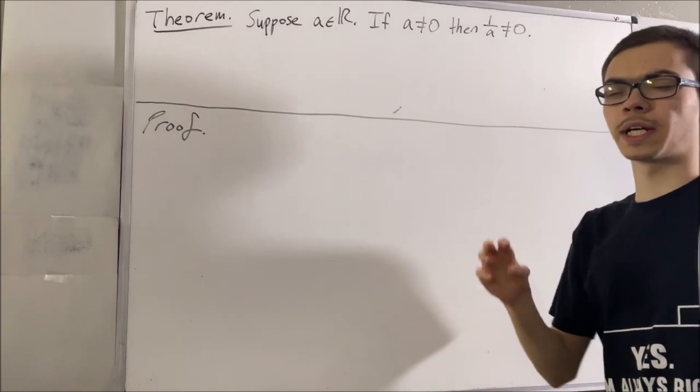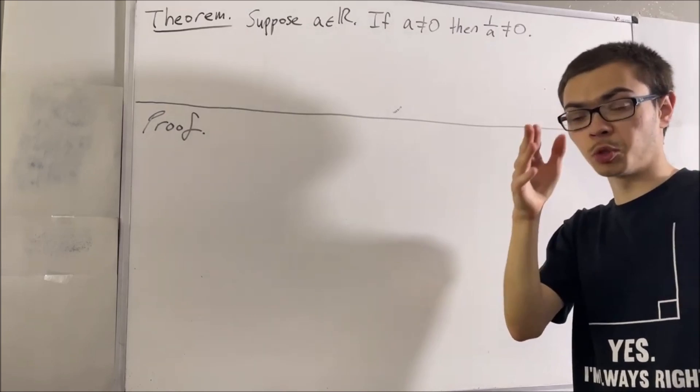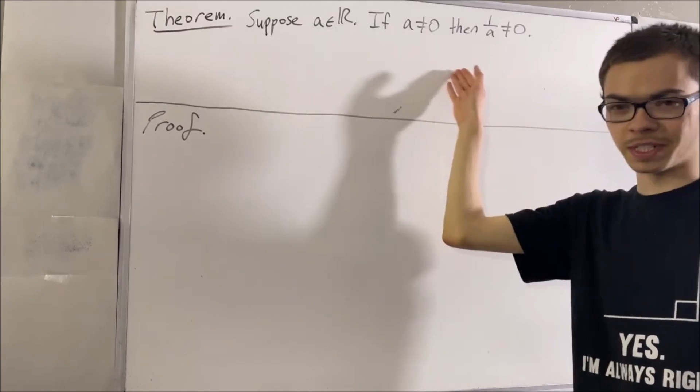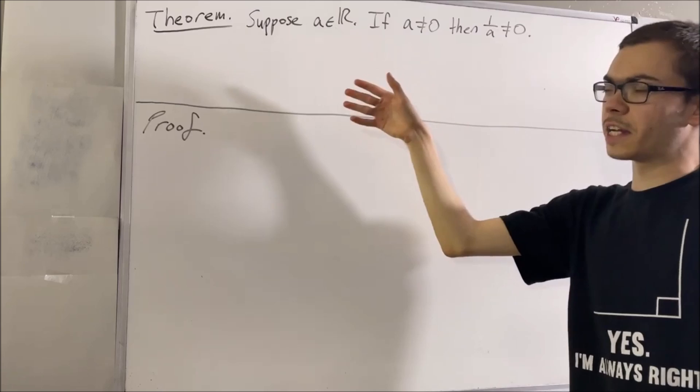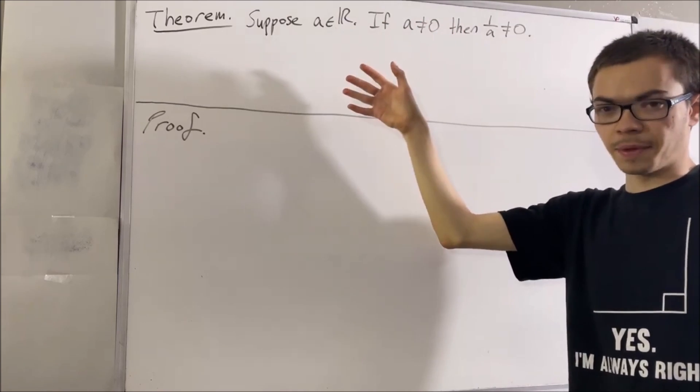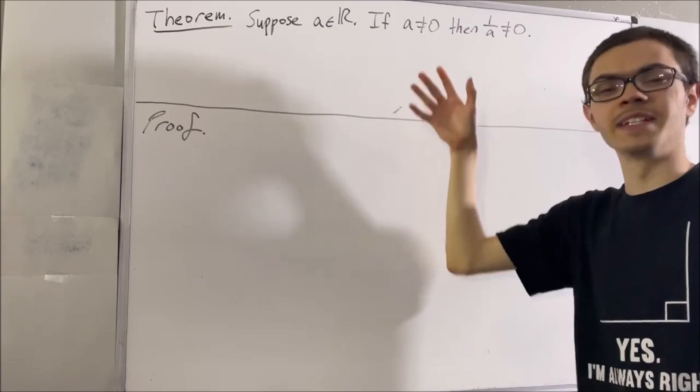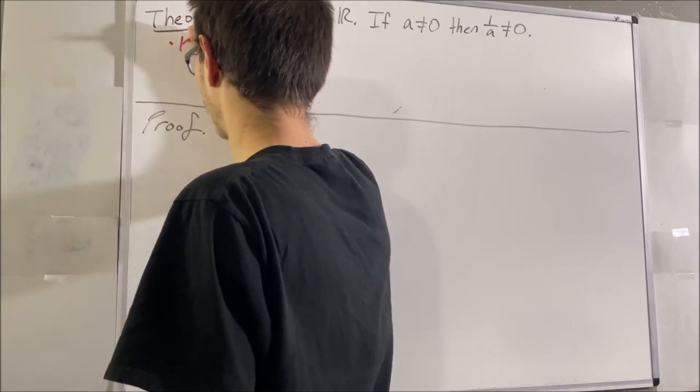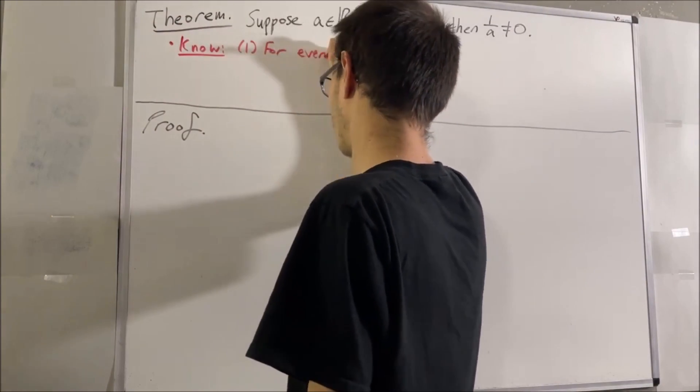We're going to be relying on three facts which come from the field properties of the real numbers in order to prove this. The first is that for every non-zero real number x, x times the reciprocal of x is equal to one.